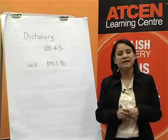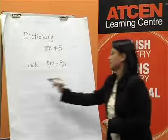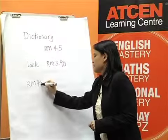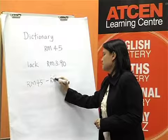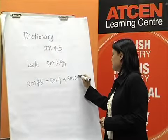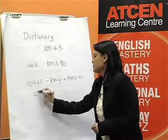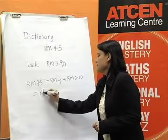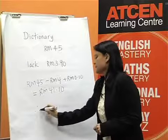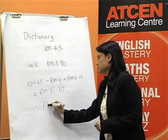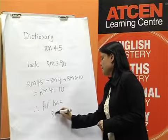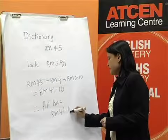Now, the answer can be mentally done by 45 ringgit minus 4 ringgit plus 10 cents. The answer will be 41 ringgit and 10 cents. Therefore, Ali has 41 ringgit and 10 cents.